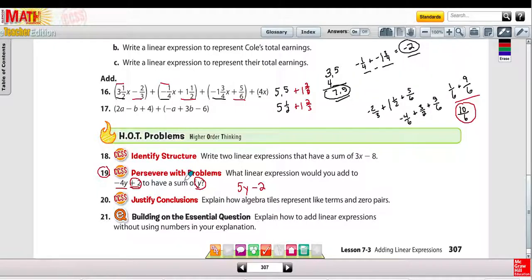So 5y take away 4y is 1y, and then plus 2 minus 2 equals 0. So what linear expression? You'd have to add 5y minus 2.